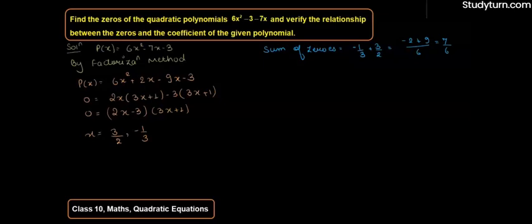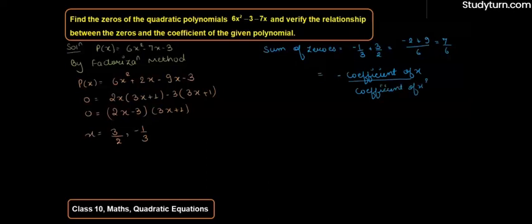And we can say that sum of zeros किसके equal होता है — it equals minus of coefficient of x upon coefficient of x². So from the given polynomial, that is -(-7)/6 = 7/6. अगर आप polynomial से check करेंगे तब भी 7/6 ही आएगा। This verifies the relationship.